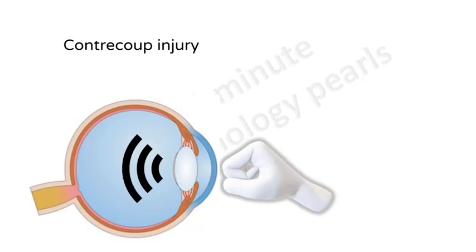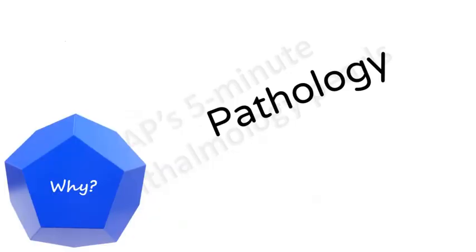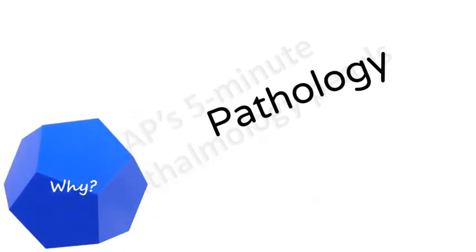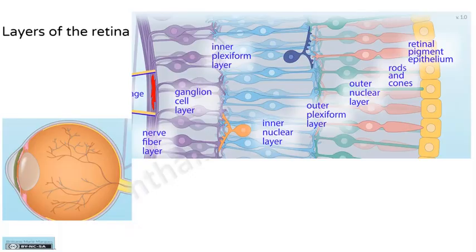How exactly does trauma produce these effects? The mechanism is by a contrecoup injury. Shock waves are transmitted across the eye and strike the opposite side of that of impact.